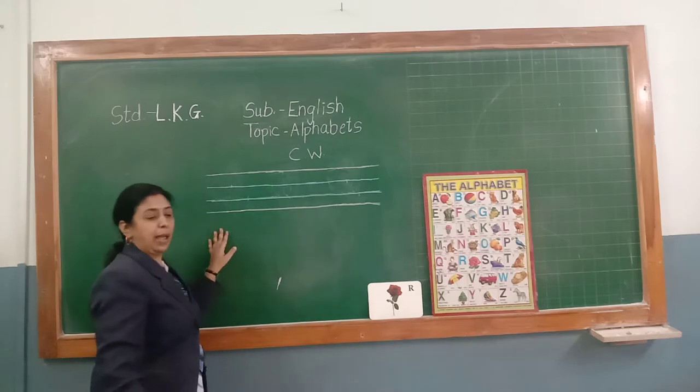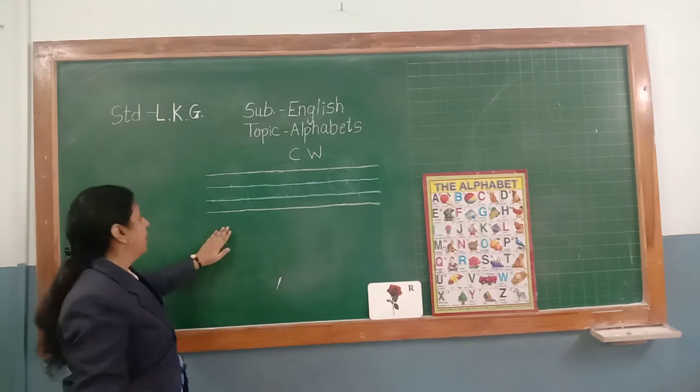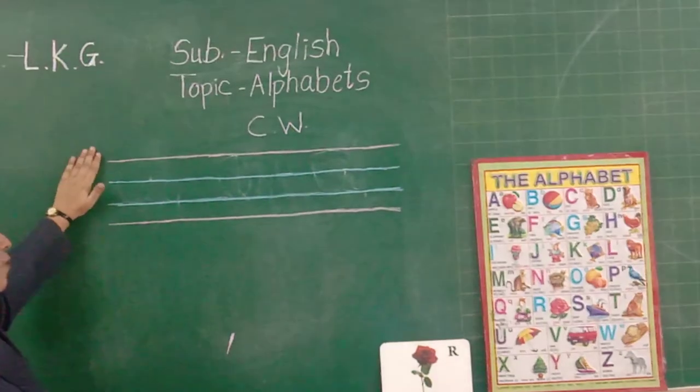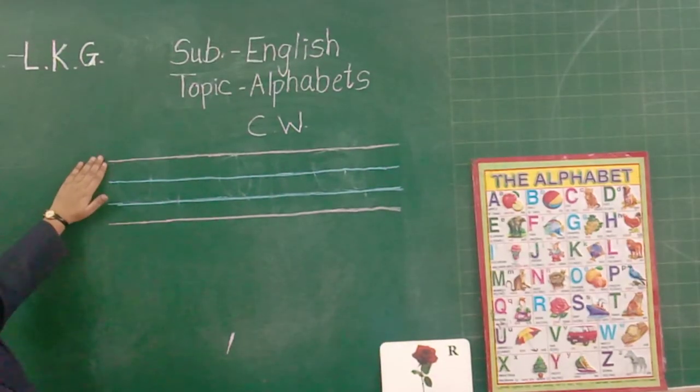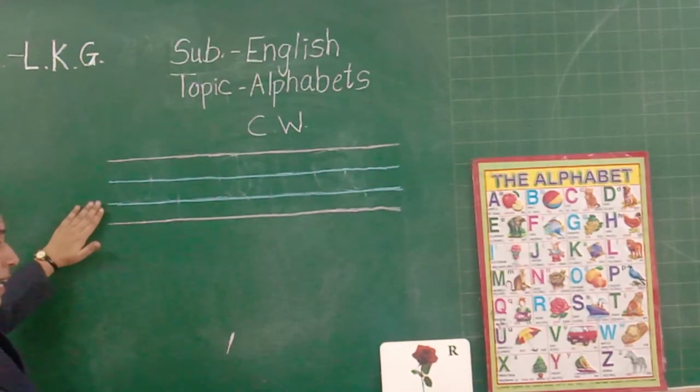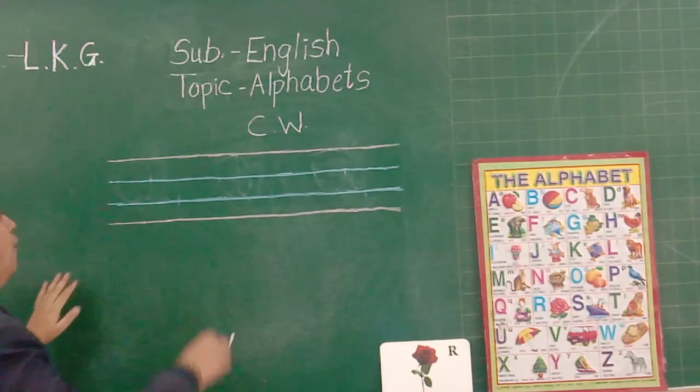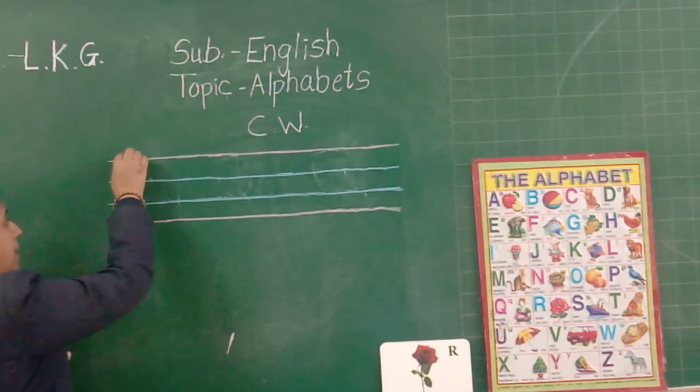How to write capital R and small r. In your notebook there are four lines: red line, blue line, second blue line, and red line. We have to start capital R from the red line.